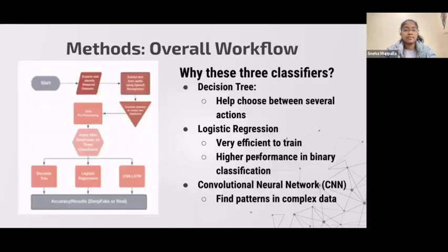So once this pre-processing is done, I'm going to be doing my overall workflow or using the classifiers I decided on. This right here is the overall workflow. As I explained before, this was deciding the dataset, extracting the features or pre-processing, and then applying the new created CSV file dataset onto the three classifiers I've chosen. So here I chose the decision tree, the logistic regression, as well as the convolutional neural network. They're all very well-known models when it comes to ML-related research or in other forms as well.